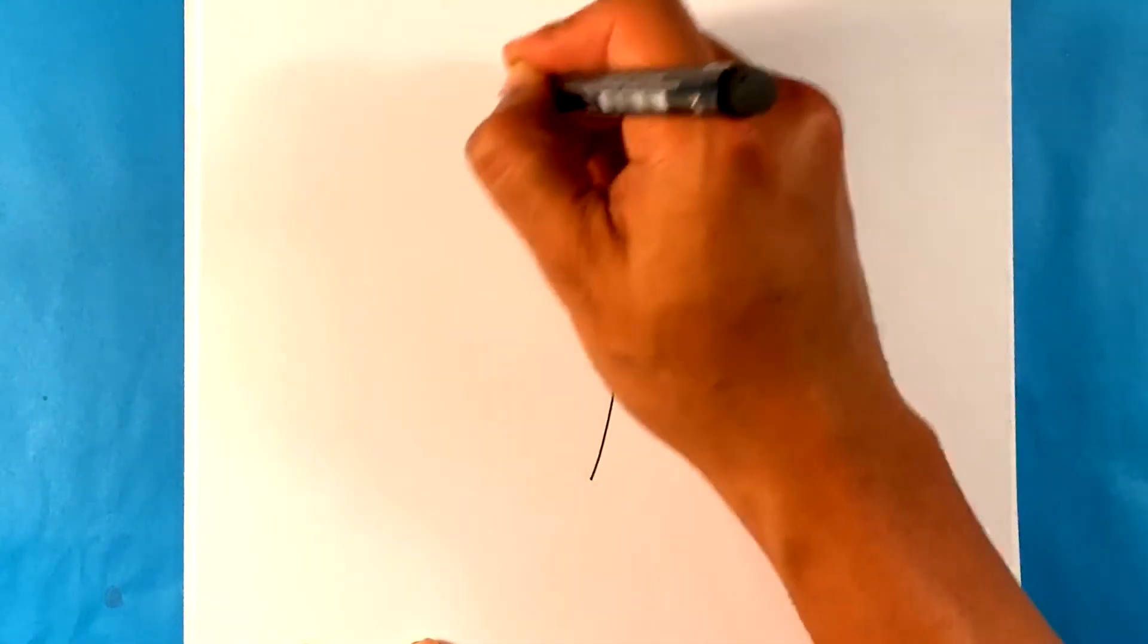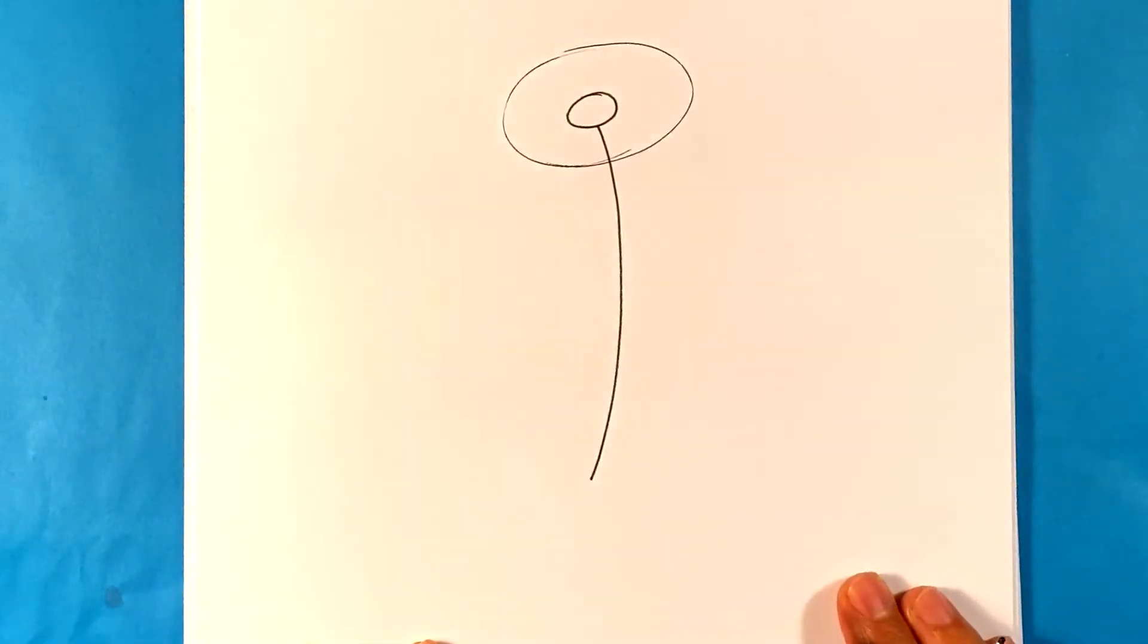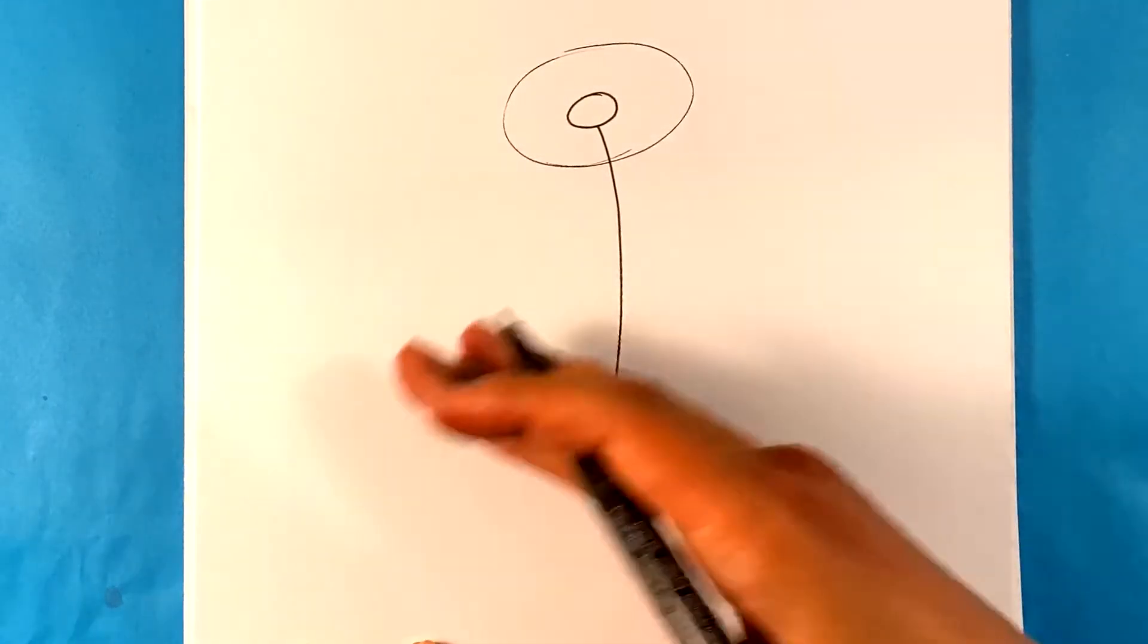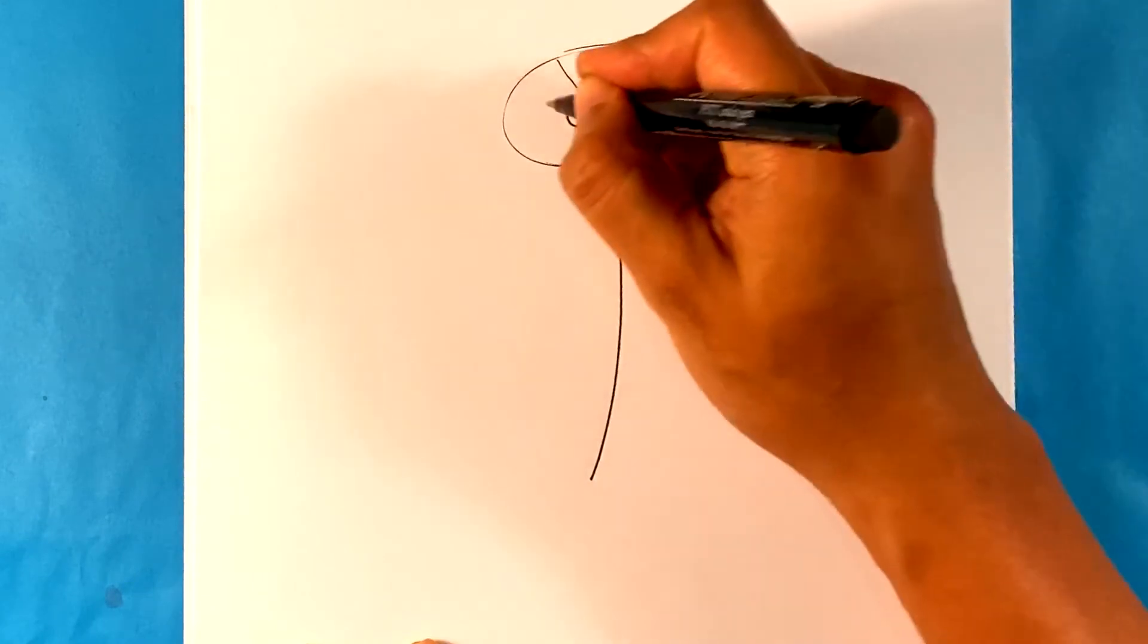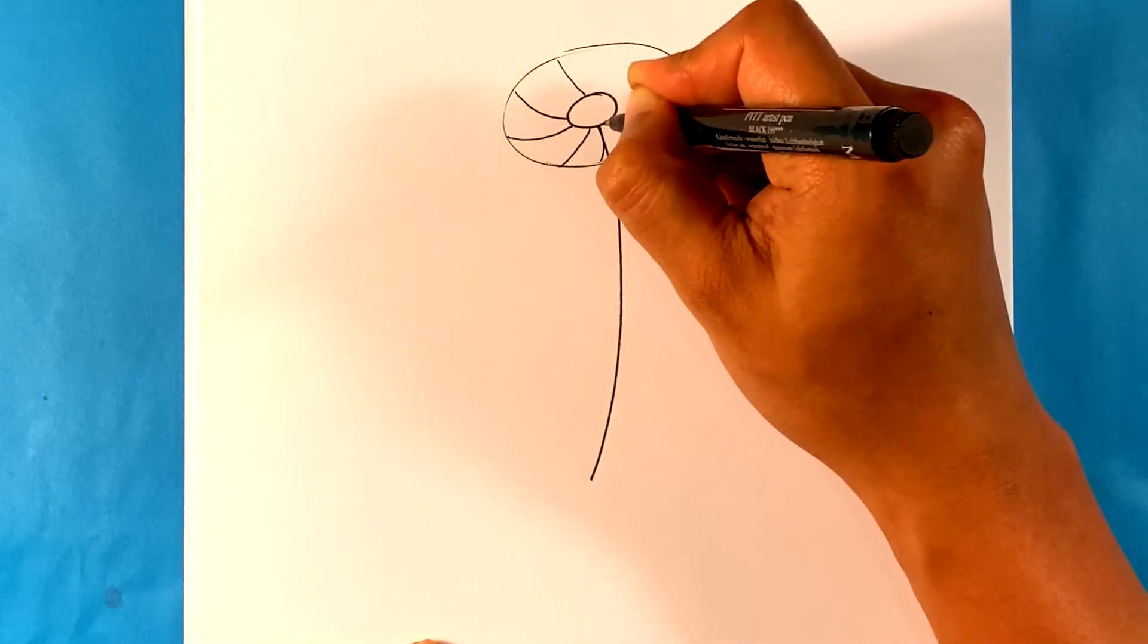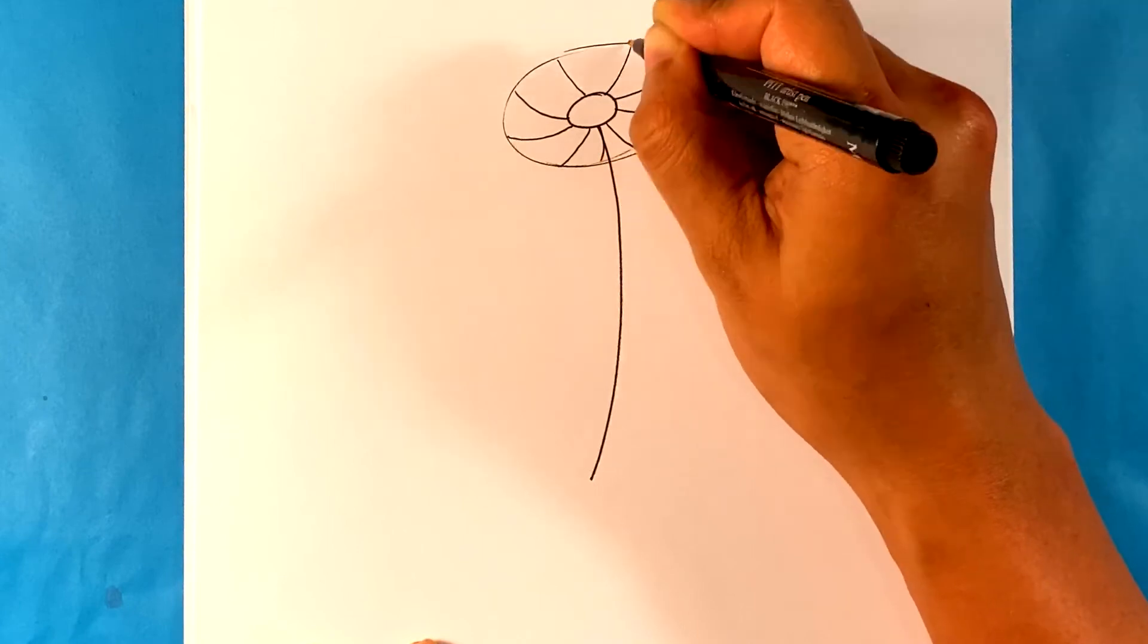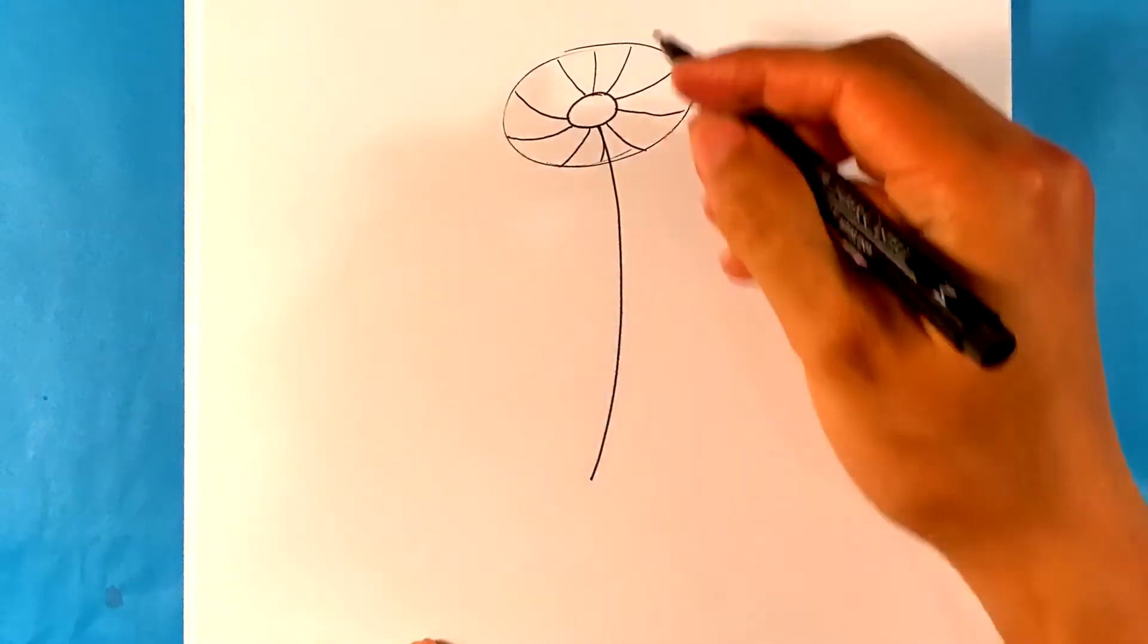And you want to create an oval shape around that, and then what you start doing is you start dividing that oval shape. You'll never go off balance or too far with one of the petals because that happens all the time. I see drawings like that.